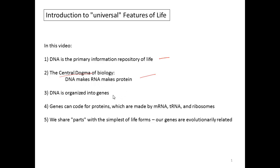We'll see that DNA is organized into genes. Genes can code for proteins, which are made from the DNA via the intermediate molecule of mRNA, and that mRNA is interpreted by tRNA and ribosomes. Finally, we share parts or genes with the simplest of life forms, which indicates that our genes are evolutionarily related.